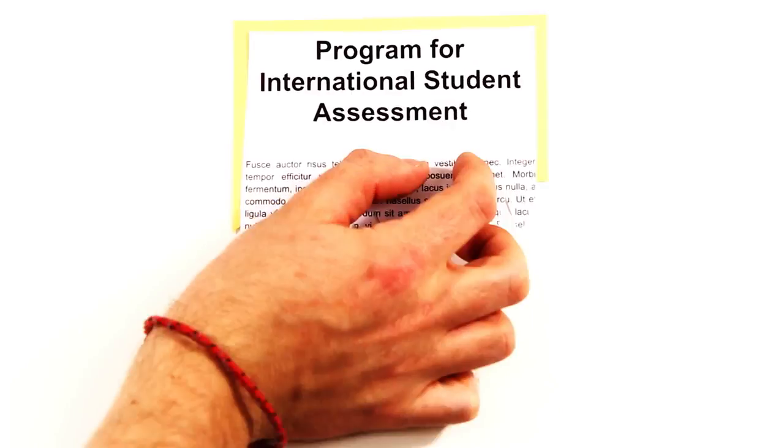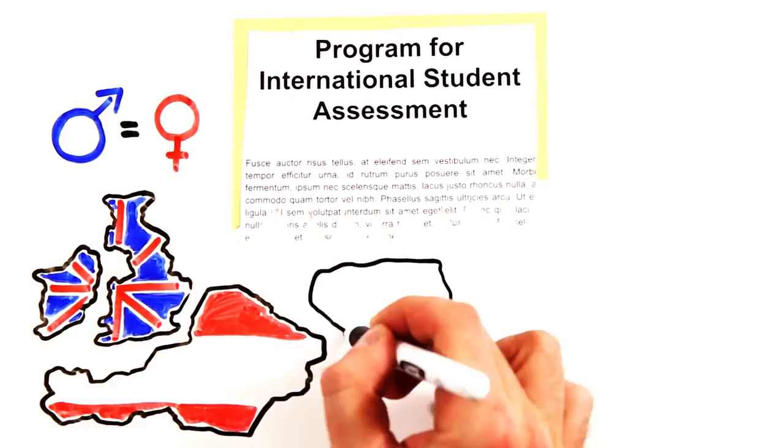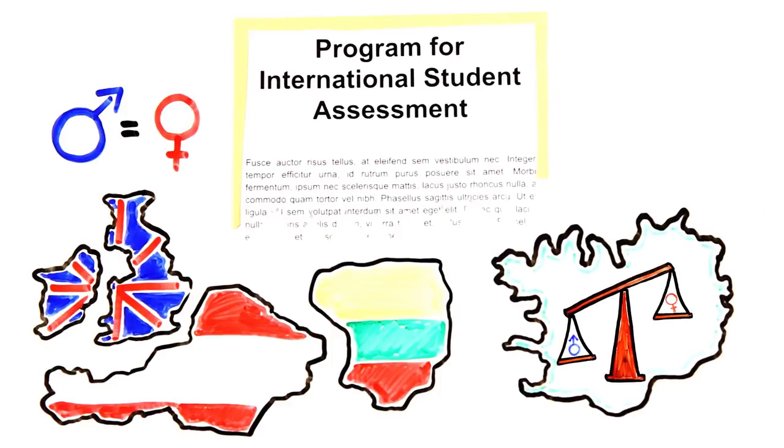Other tests, like the Program for International Student Assessment, show both sexes performing equally in several countries, with girls performing better in some, like Iceland, suggesting cultural and environmental differences, and not necessarily biological differences at play.